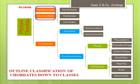Cephalochordata and Urochordata do not have a well-defined head or cranium and are grouped together under Acrania. Vertebrata have a well-defined head and cranium, so they are grouped under Craniata. Urochordata is classified into three classes: Ascidiacea, Thaliacea, and Larvacea, whose details will be covered when studying the subphylum. Vertebrata is divided into two divisions — Agnatha and Gnathostomata — based on the character of jaws.